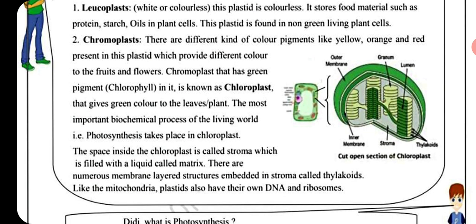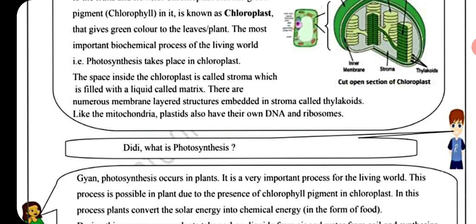Chloroplast gives green color to the leaves of plants. The most important biochemical process of the living world — photosynthesis — takes place in the chloroplast. Chloroplast has a fluid-filled space called stroma, in which numerous membrane-layered structures called thylakoids are embedded. Like mitochondria, plastids also have their own DNA and ribosomes.